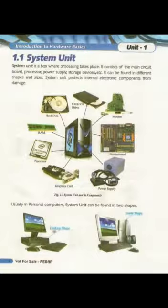System unit एक डिबा है जहां processing होती है. यह main circuit board, processor, बिजली की फ्राहमी, storage devices वगेरा पर मुश्तमिल होता है. यह मुफ्तलिफ शकलों और मुफ्तलिफ size में पाया जाता है. Screen पर मजूद CPO नजर आ रहा है जिसको system unit कहते हैं, जबके main board की तस्वीर देखने को मिल रही है. Main board system unit के अंदर मजूद होता है.